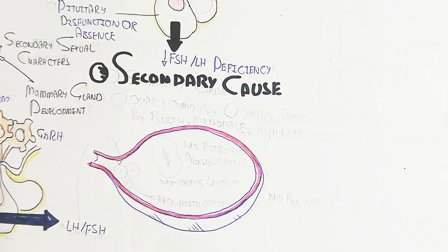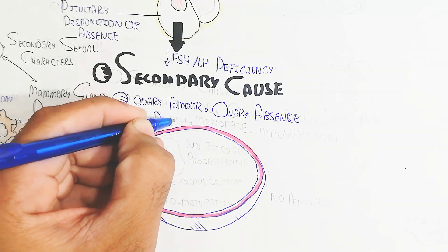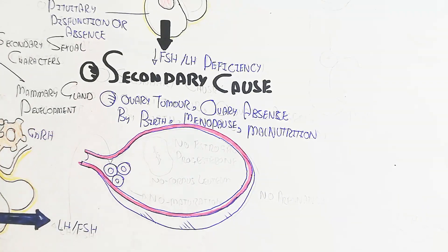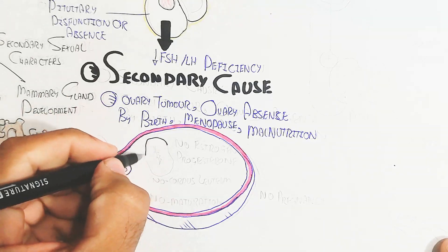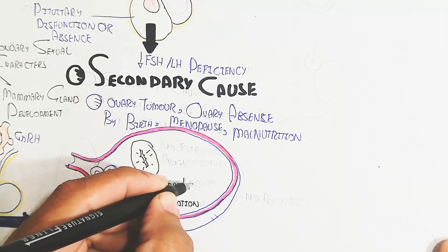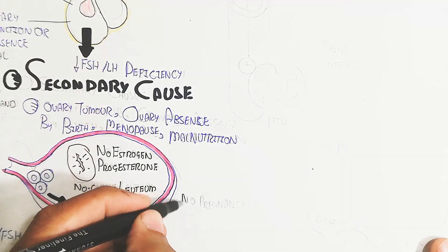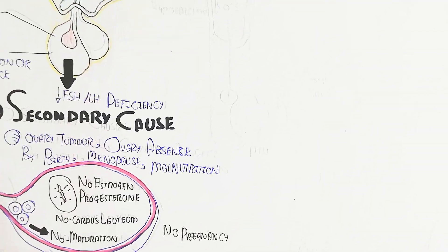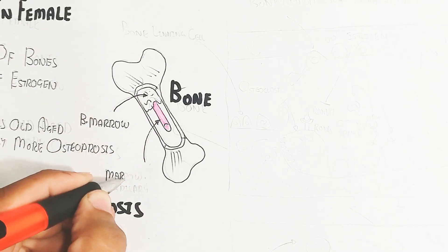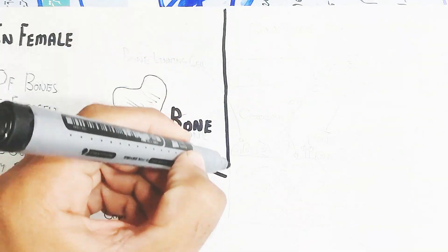Secondary causes occur when LH and FSH are produced normally but cannot reach their target tissue. These include ovarian tumor, congenital absence of the ovary, menopause, or malnutrition. Without functional follicle-stimulating hormone receptors on primary follicles, there is no follicle maturation, no corpus luteal phase, and therefore no estrogen or progesterone production — neither placental estrogen nor luteal estrogen.